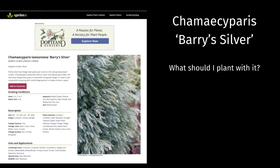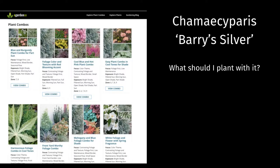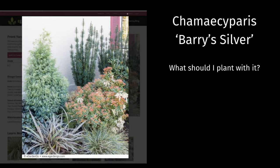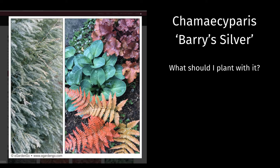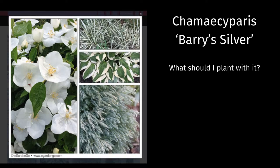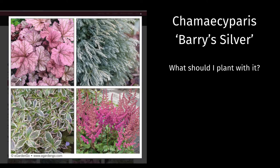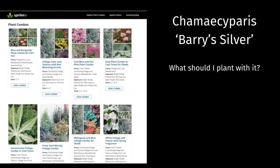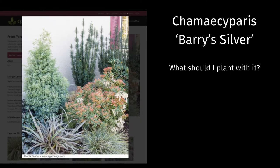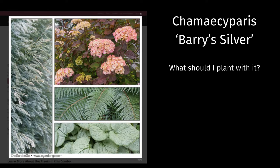So the question becomes: what should I plant with it? I couldn't be happier you asked, because we've got lots of ideas. All of these planting combinations include Camassia 'Berry Silver,' and if you click through you'll get the full planting recipe that includes details about each of the individual plants.